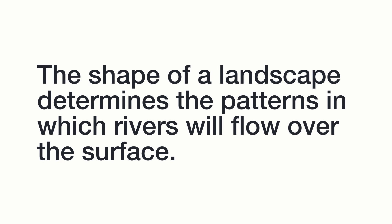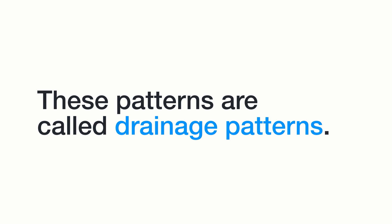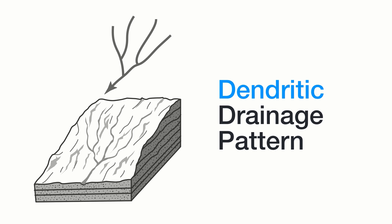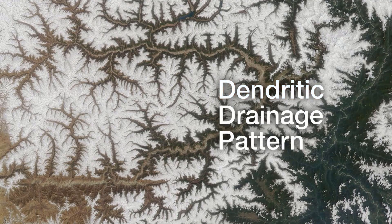Another thing to think about when looking at the shape of the land is that it can have an effect on how streams and rivers flow over the surface. These patterns are known as drainage patterns. One is called a dendritic drainage pattern, and this occurs when streams and rivers flow down the side of a slope, often found in mountainous areas. The streams flow downhill, pulled by gravity, and come together from small tributaries into a larger river. Here's an example of a dendritic drainage pattern as seen from space.